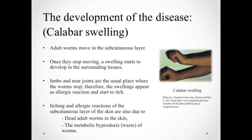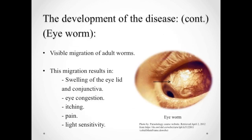Dead adult worms and their metabolic byproducts or waste can worsen an infection of the subcutaneous layer of the skin. Visible migration of the adult worms to the eye can also occur frequently, which is another main symptom of this disease — that is why Loa loa is also called the eye worm. This migration results in swelling of the affected eyelid and conjunctivitis, eye congestion, itching, pain, and light sensitivity.